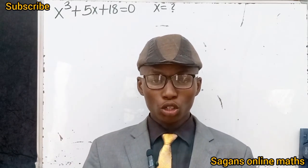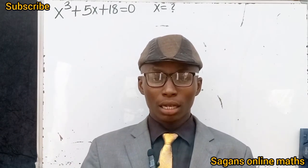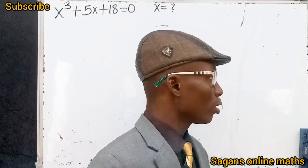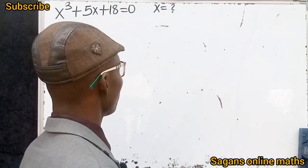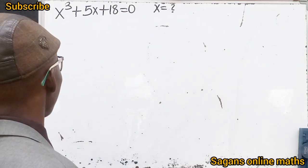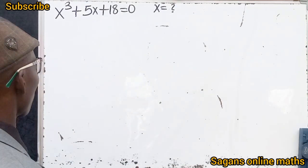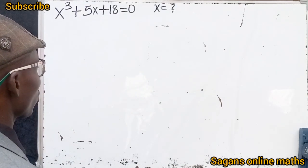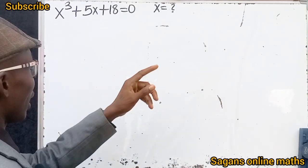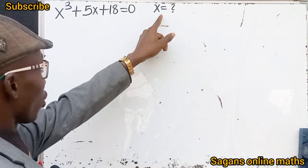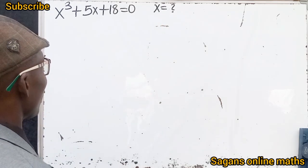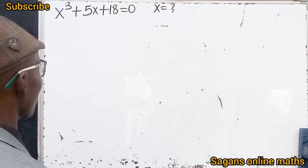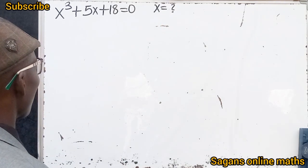Hello everyone, welcome to my channel. Let's solve this question together. We are going to solve x to the power of 3 plus 5x plus 18 equals zero. We are asked to find the value of x. Now this question is as simple as A, B, C, D.